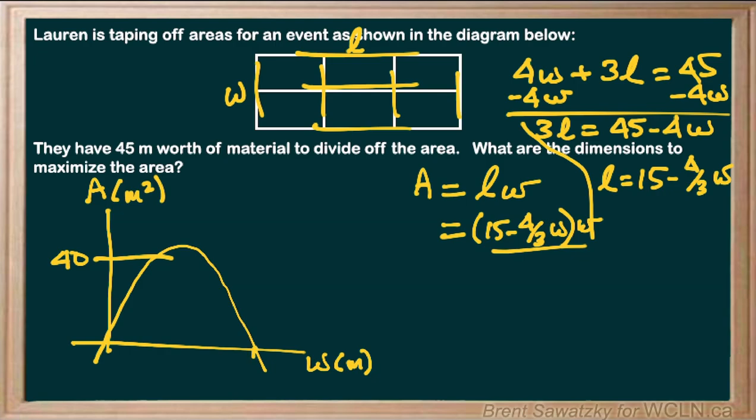We also see that the x-intercept here is 11.25, so that halfway point, we can divide that by two or figure it out from the vertex when we get to that. At this point what we can do is identify the vertex because we are looking at the maximum there.